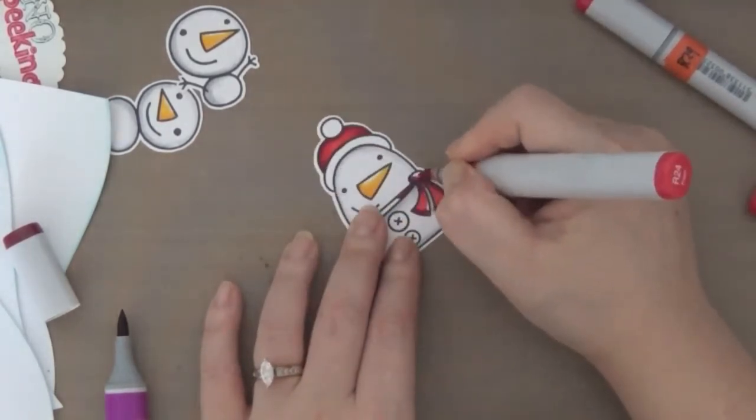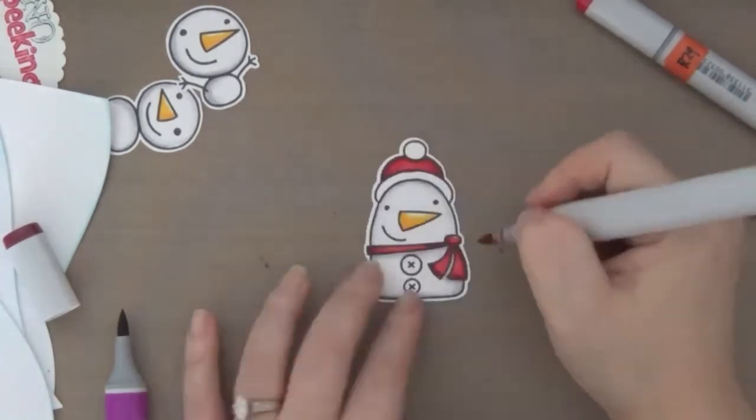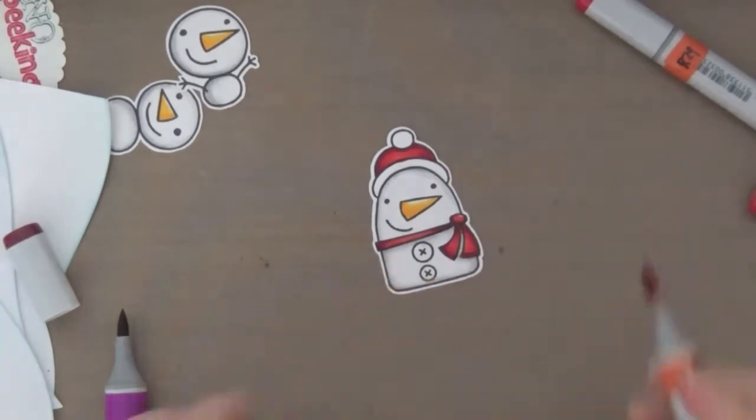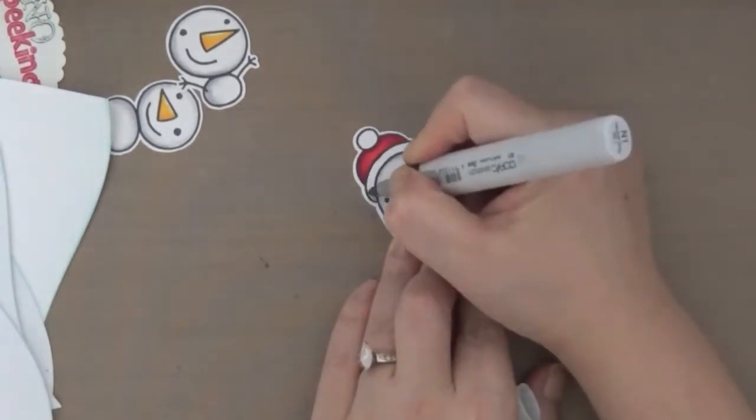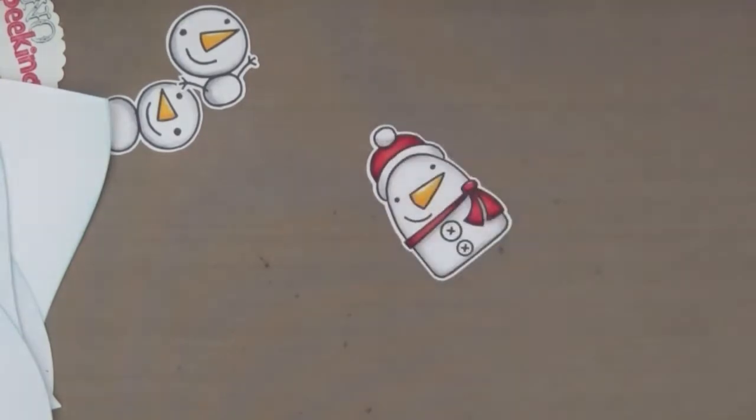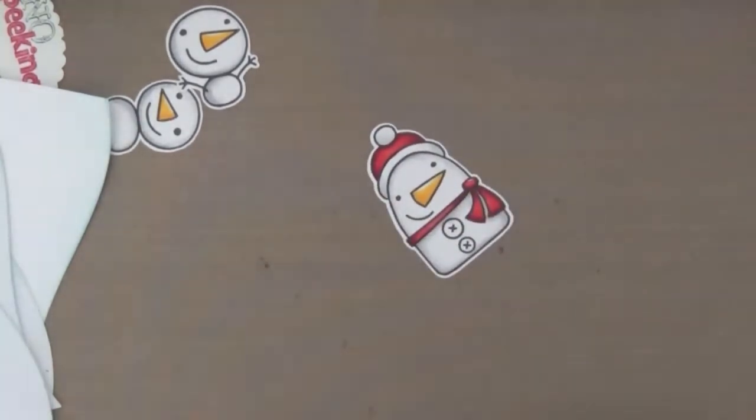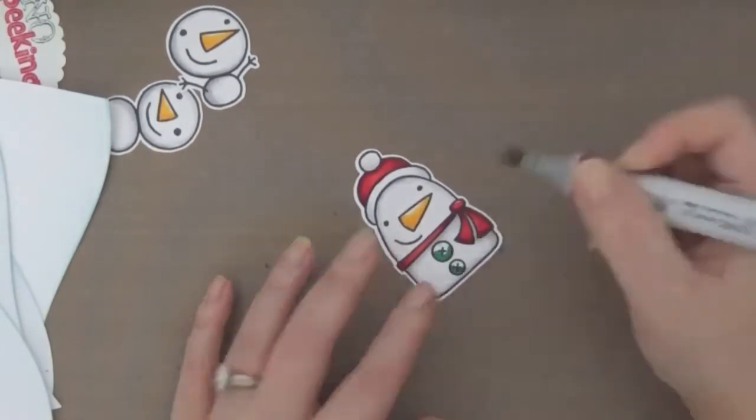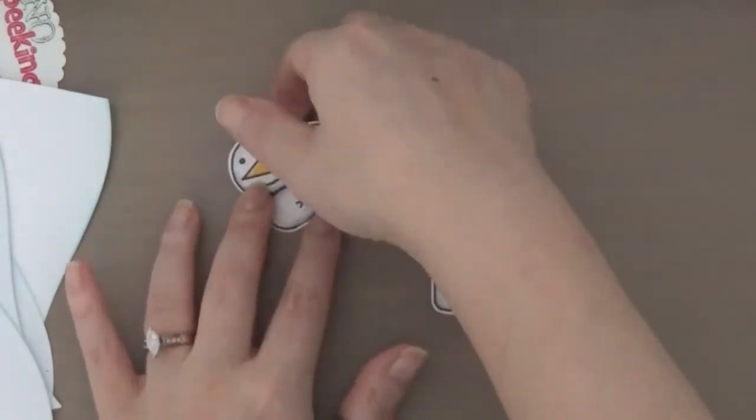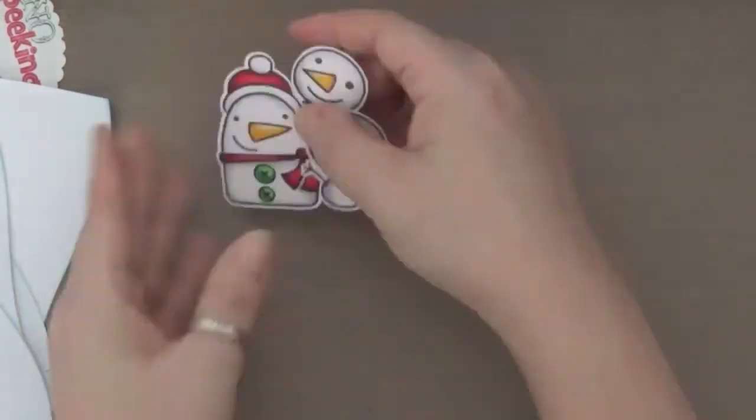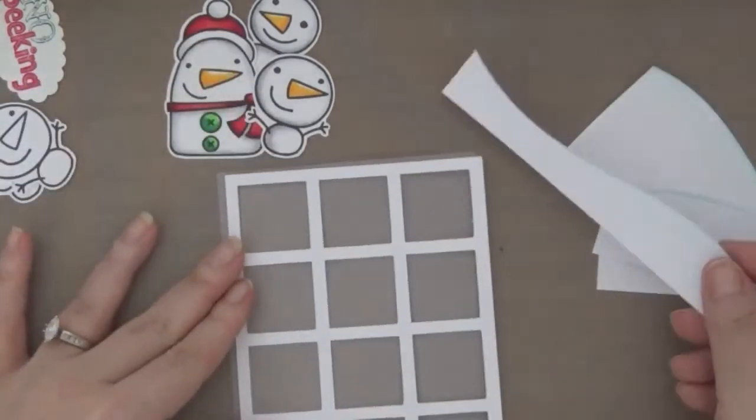And I again start with my darkest and then work my way to my lightest. And then if I need to, I go back with my darkest and medium and light. So for this part I'm just using the same color as a snowman. And then for the green I'm just using two greens. So very simple, fast coloring.